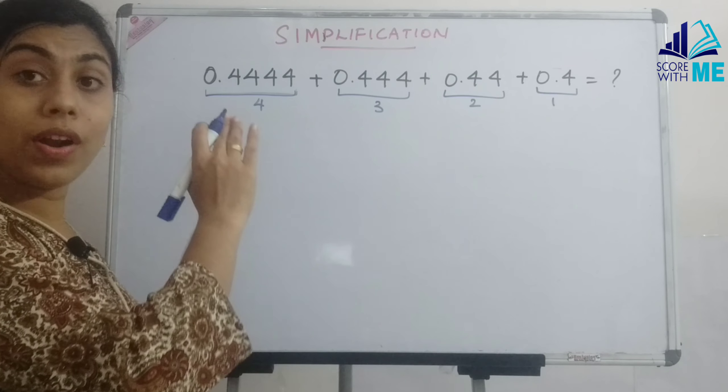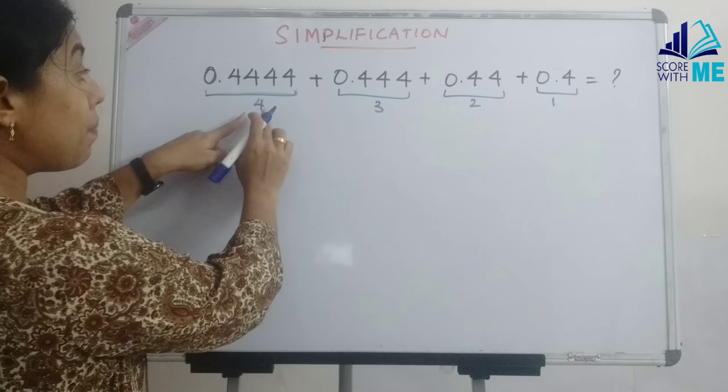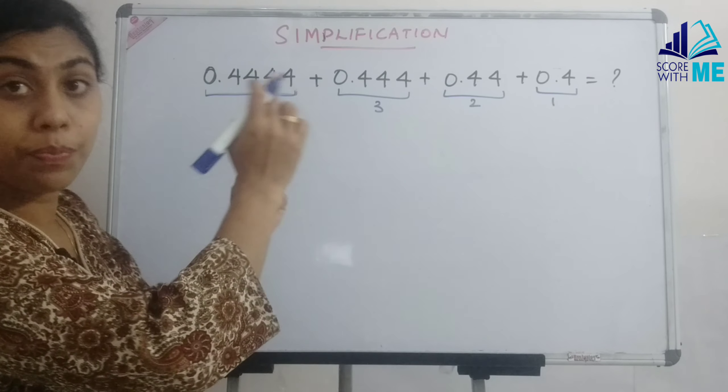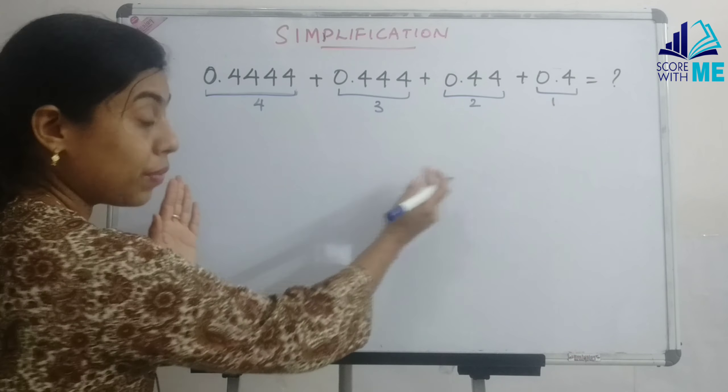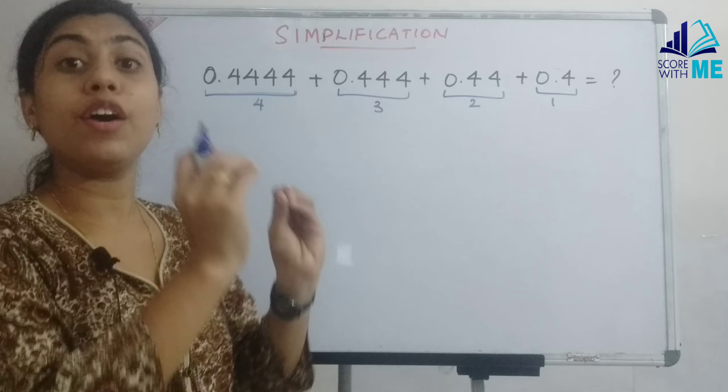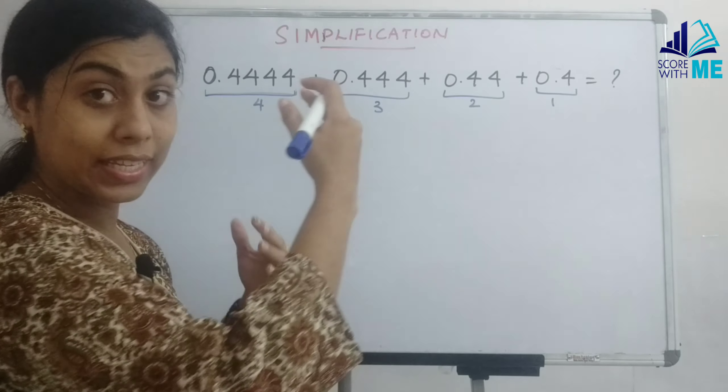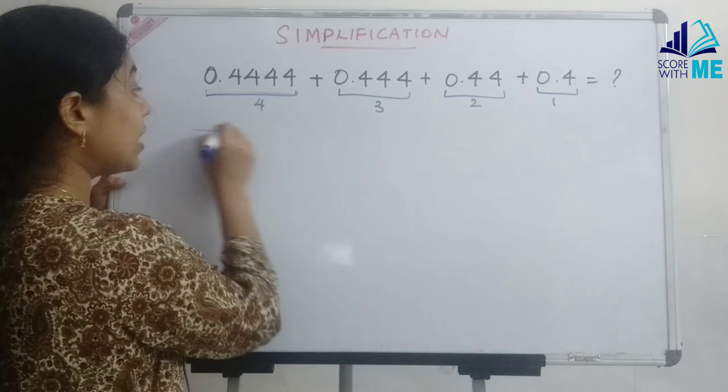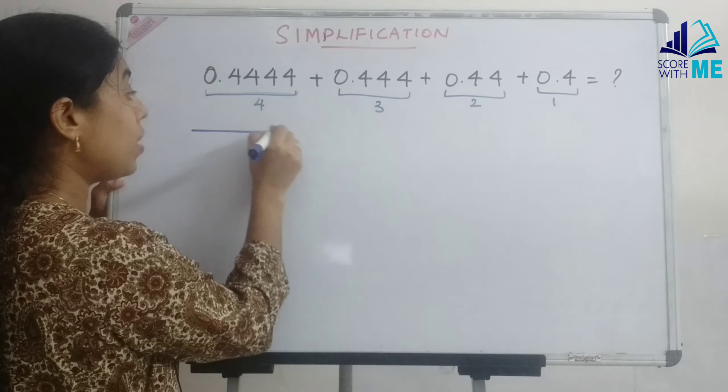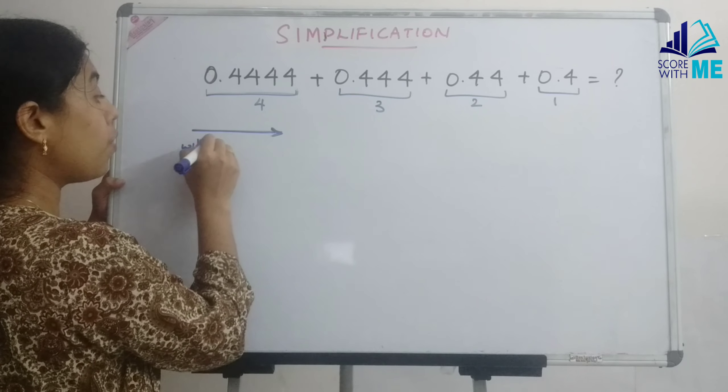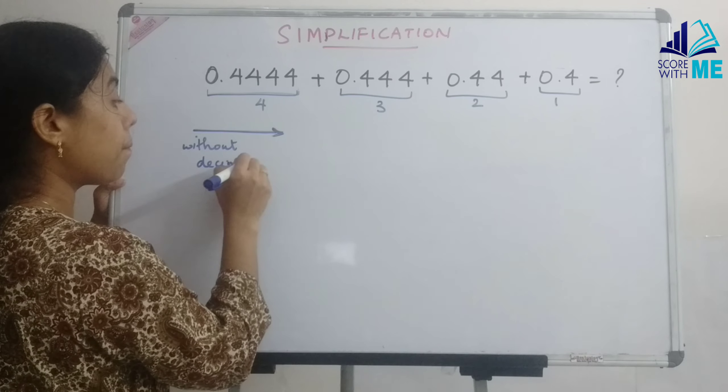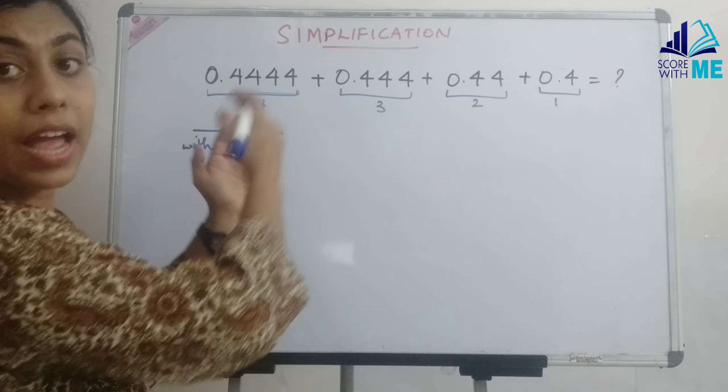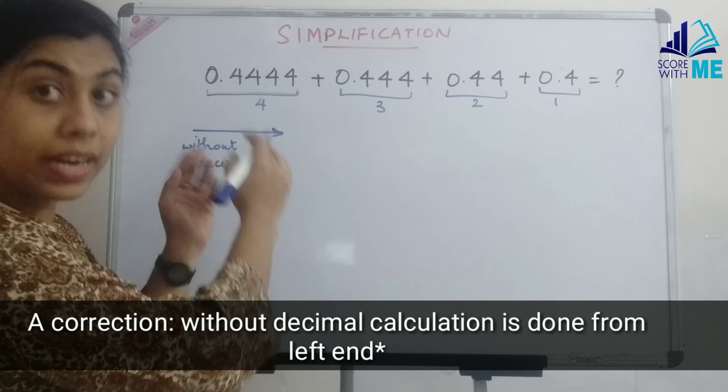When we had whole numbers, what did we do? We multiplied this 4 with the common digit being 4. 4 times 4 is 16 we did and we started writing from the right. Now here the small change is that the same thing we are multiplying but here we are doing from the right hand side first. So without decimal, when there was no decimal, we started our multiplication and writing the numbers from the right hand side.